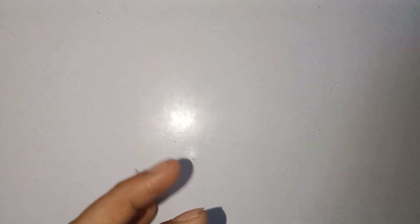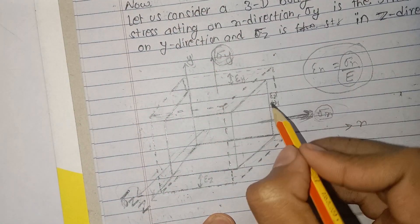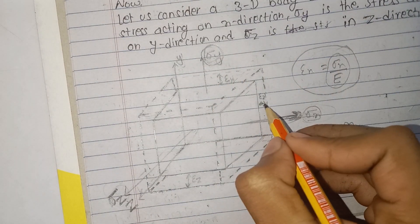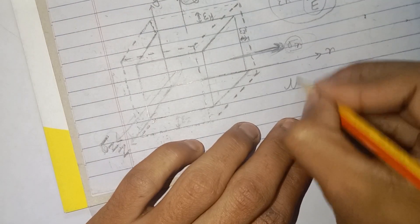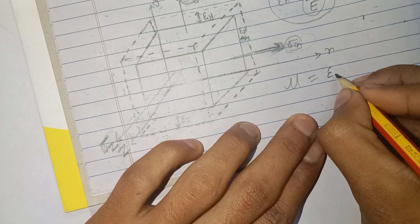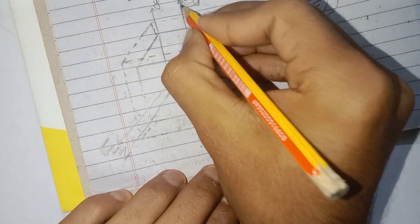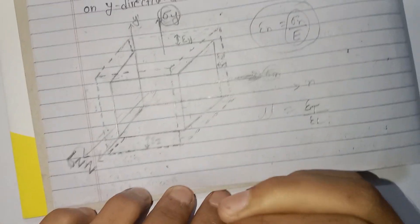The deformation in the x-direction due to sigma y — sigma y is acting, and sigma y causes deformation in the x-direction. This deformation is given by Poisson's ratio multiplied by sigma y divided by E. Poisson's ratio is the ratio of lateral strain to longitudinal strain — lateral divided by longitudinal — which is the perpendicular direction divided by the loading direction.